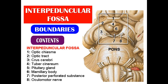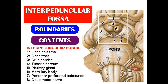The contents of the interpeduncular fossa, from before backward: the tuber cinereum (part of the hypothalamus, connected with the pituitary gland by the infundibulum), the mammillary bodies (part of the hypothalamus), the posterior perforated substance (perforated by the central branches of the posterior cerebral artery), and the exit of the oculomotor nerve.